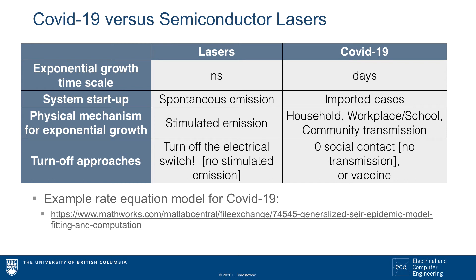What starts off the process is photons generated by spontaneous emission in the case of a laser, while for the pandemic it is cases imported into the country. The mechanisms for exponential growth are very similar in that they both require interactions between particles. In the laser, photons and electrons interact to provide stimulated emission. In the pandemic, it is human-to-human interaction which takes place at home, at school, in the community, and which leads to transmissions.